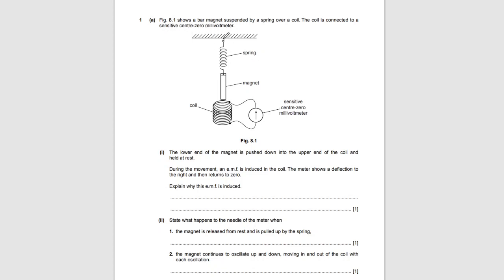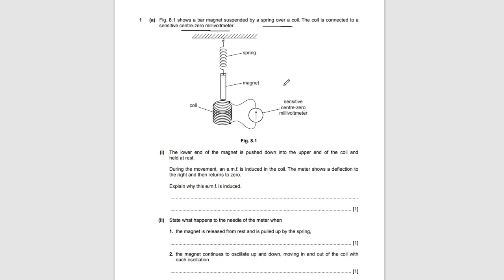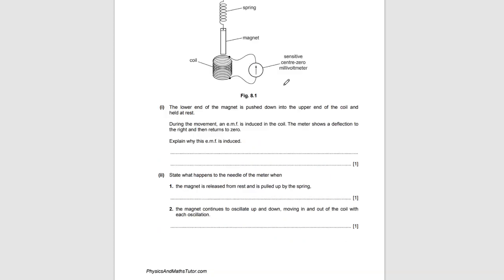Figure 8.1 shows a bar magnet that is suspended by a spring over a coil, and the coil is connected to a center-zero millivoltmeter. Here's the spring, here's the magnet, and here is the center-zero millivoltmeter. I already know this should be related to electromagnetic induction because whenever you see a magnet and a coil, you know that something dealing with electromagnetic induction will happen.